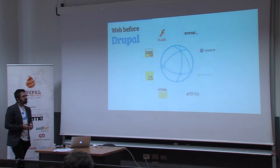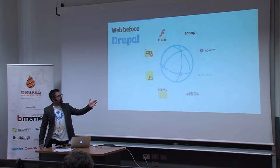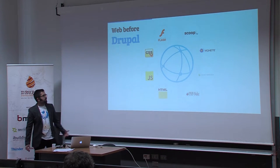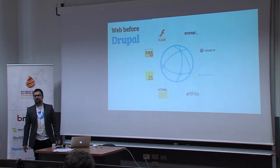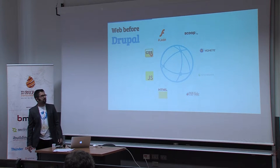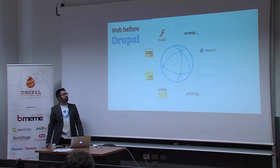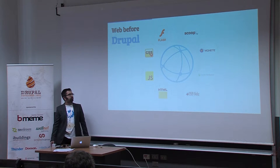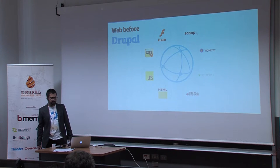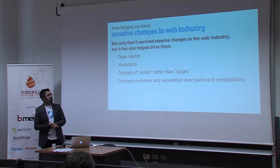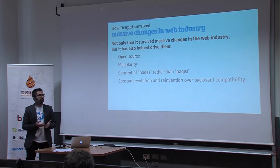The web before Drupal looked like this. In the early 90s we started to get the first websites online, built mostly using HTML and images. Then we got JavaScript in 1995, CSS in 1996, then Flash got really popular in the late 90s. Around that time many content management systems emerged — like Scoop, Vignette, and PHP Nuke — and they were all very popular at some point, but today they are all obsolete. Drupal has outlived them all.